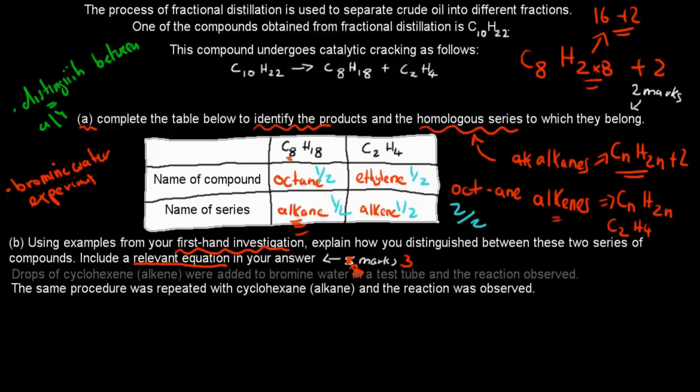And cyclohexene was our alkene. And we put these drops of cyclohexene into our bromine water. So we added them into our bromine water. So drops of cyclohexene, alkene, were added to bromine water in a test tube. So the bromine water was in a test tube, and we added these cyclohexene in it. And then we observed the reaction.